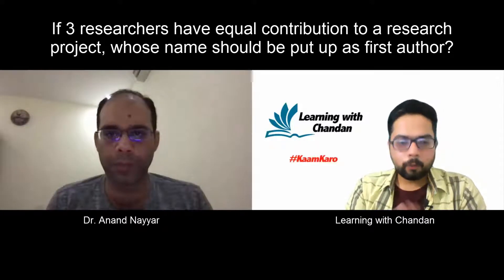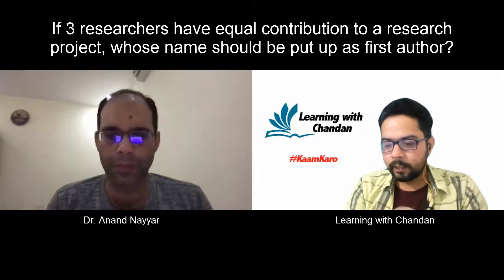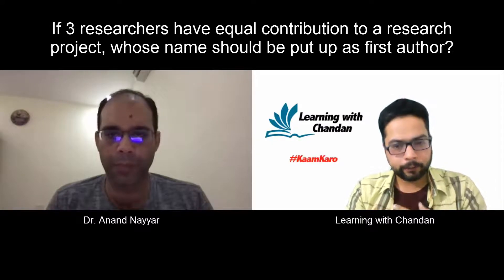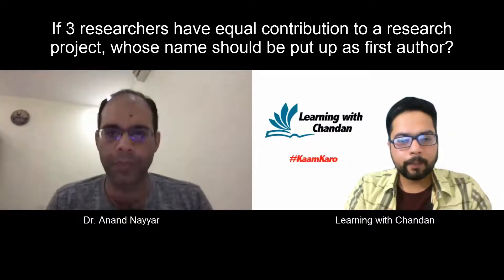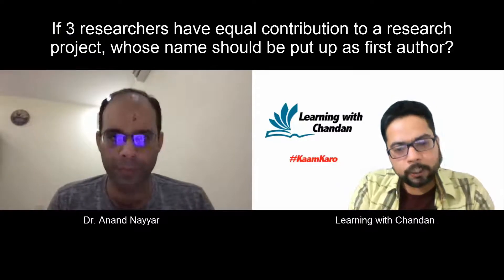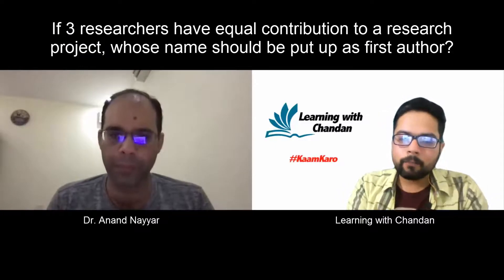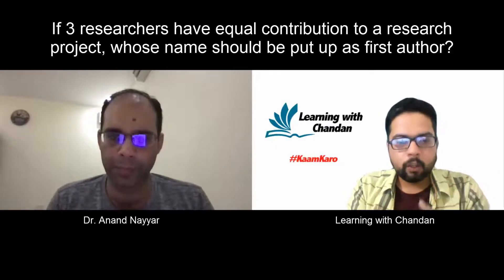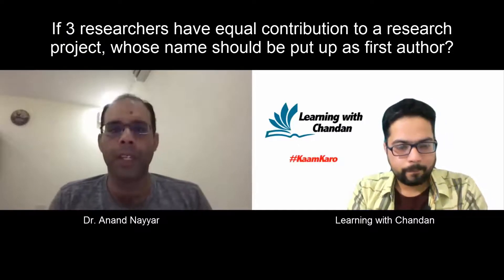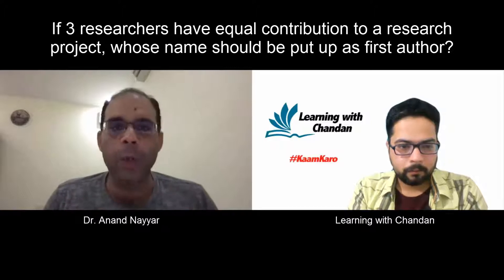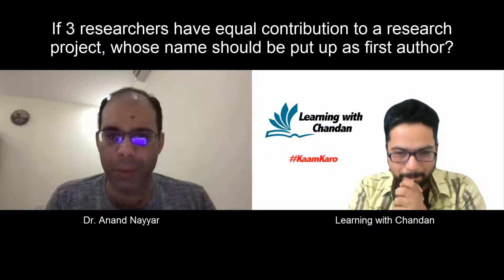I have written a research paper and three of my lab mates are part of that work — all three of them have equal contribution. When we write a paper of that work, whose name should come as the first author? Thank you, Chandan sir, for inviting me to your next video series.